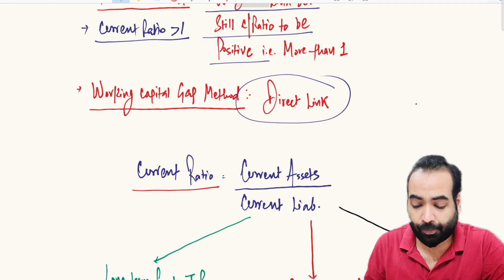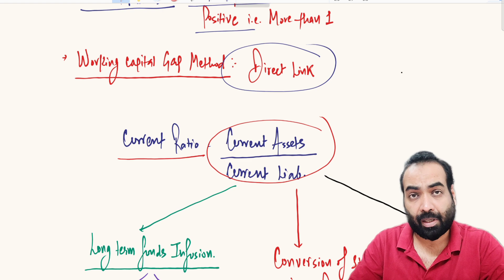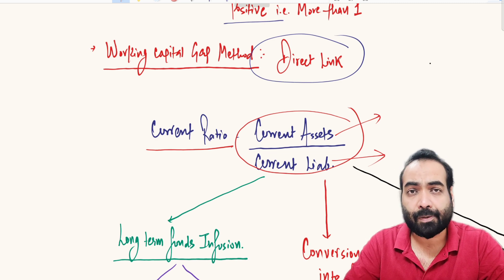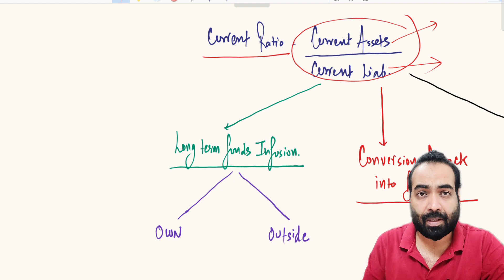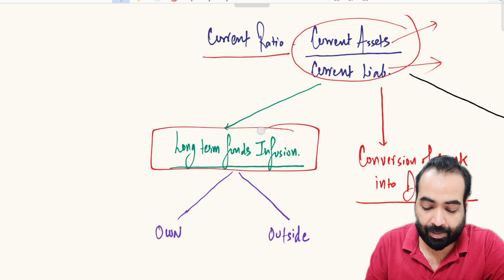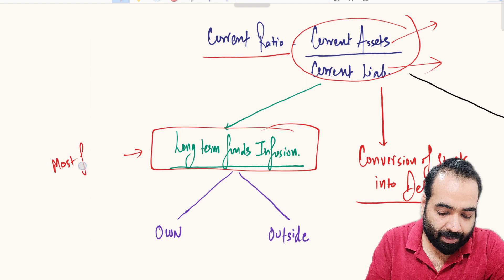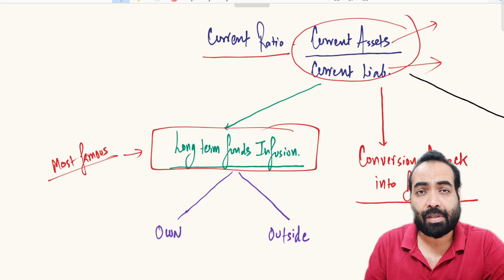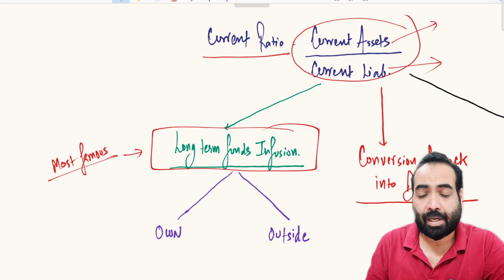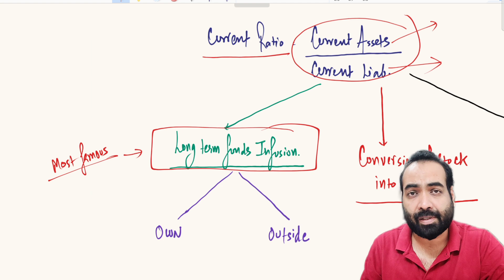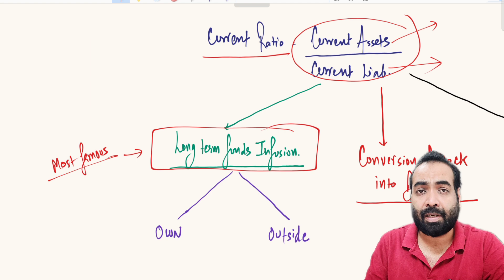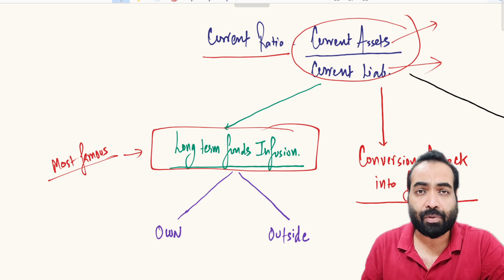So how do we improve the current ratio? Recall the formula: current ratio equals current assets divided by current liabilities — current assets are in the numerator and current liabilities are in the denominator. There are three main ways of improving the current ratio. The first method is long-term funds infusion. This is the most famous, most practical way, suggested by most banks, and is also asked in many credit interviews or sales team interviews.